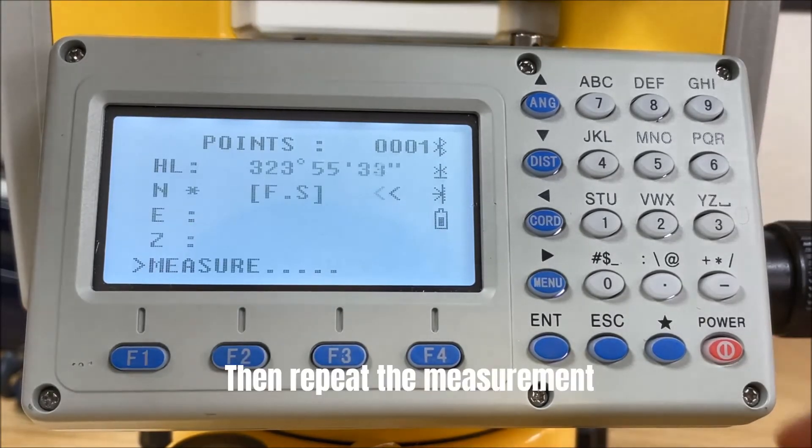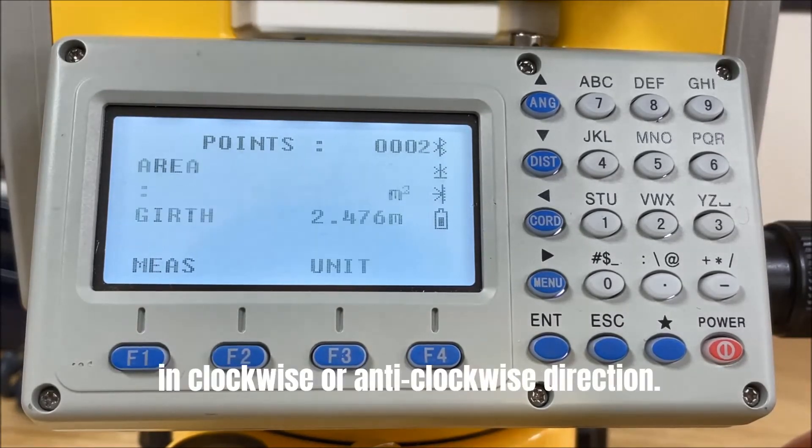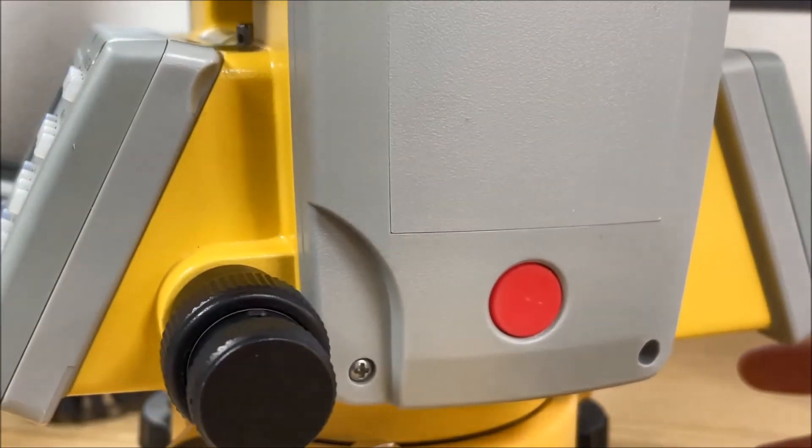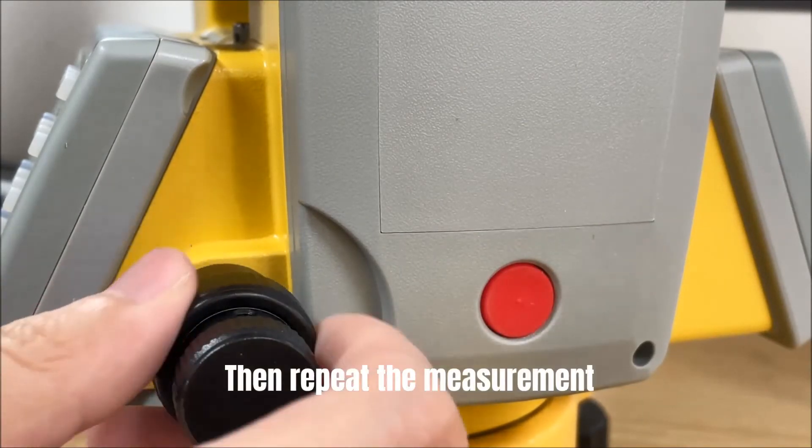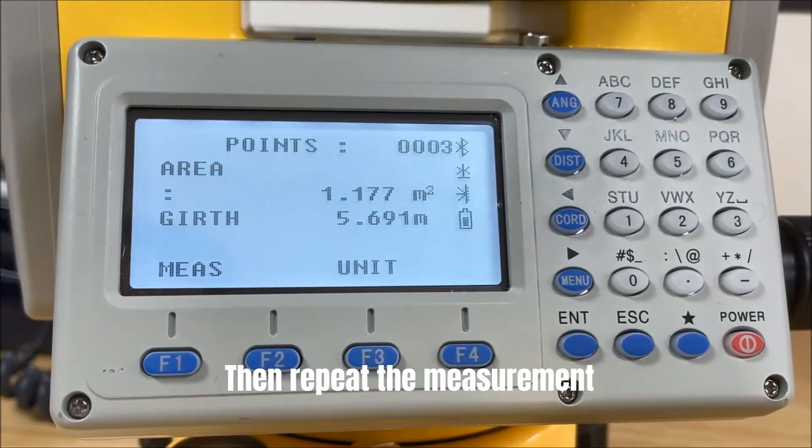Then repeat the measurement in clockwise or anti-clockwise direction. The calculated area and girth are displayed.